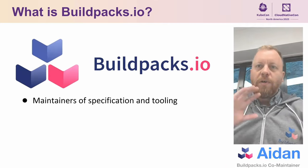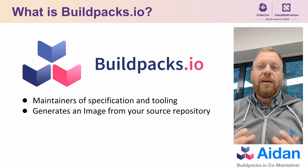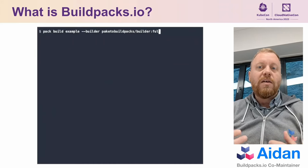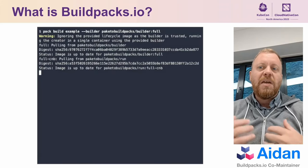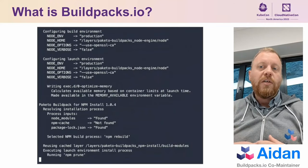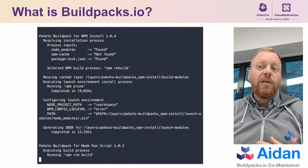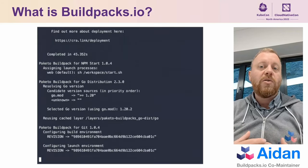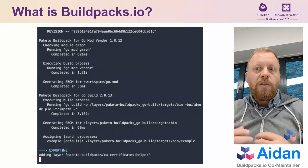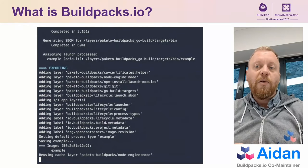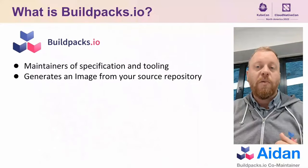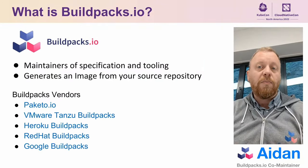Hello KubeCon! Buildpacks generate an OCI image directly from your source code. CloudNative Buildpacks is a CNCF incubating project that maintains a specification for Buildpacks and some tools to use them. On screen you can see our pack tool generating an image from a source project consisting of a Go service with a React front-end. There are multiple implementations of the CloudNative Buildpacks specification, and our vibrant ecosystem allows you to choose the set of Buildpacks that suit your development processes.